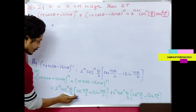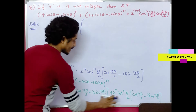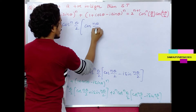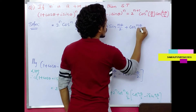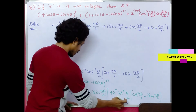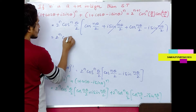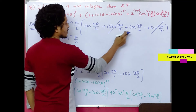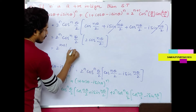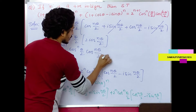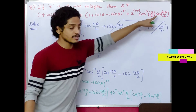Taking the common factor 2^n · cos^n(θ/2) out: we get cos(nθ/2) + i sin(nθ/2) + cos(nθ/2) - i sin(nθ/2). The imaginary parts cancel, leaving 2cos(nθ/2). So the result is 2^n · 2 · cos^n(θ/2) · cos(nθ/2) = 2^(n+1) · cos^n(θ/2) · cos(nθ/2), which is RHS.